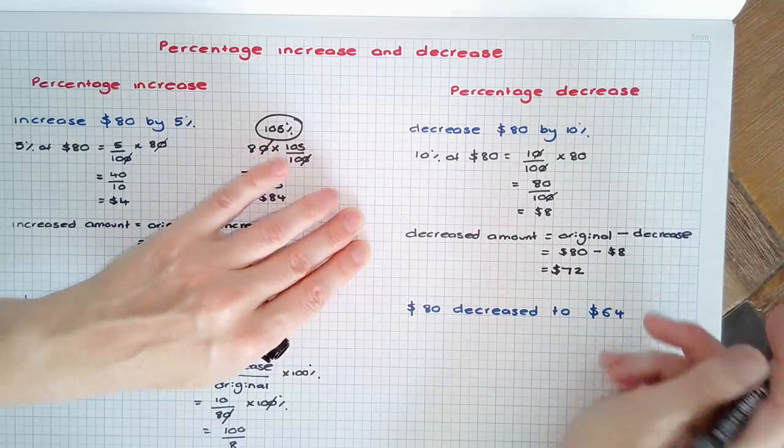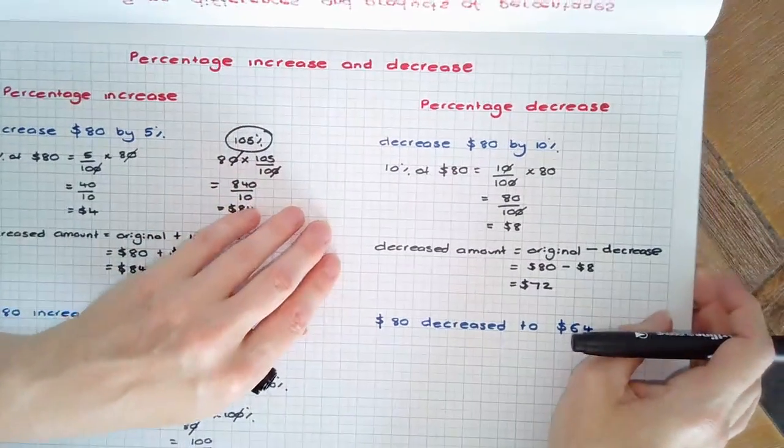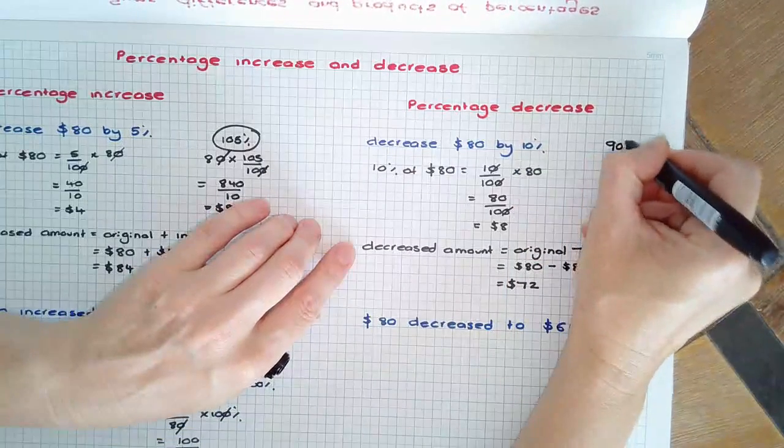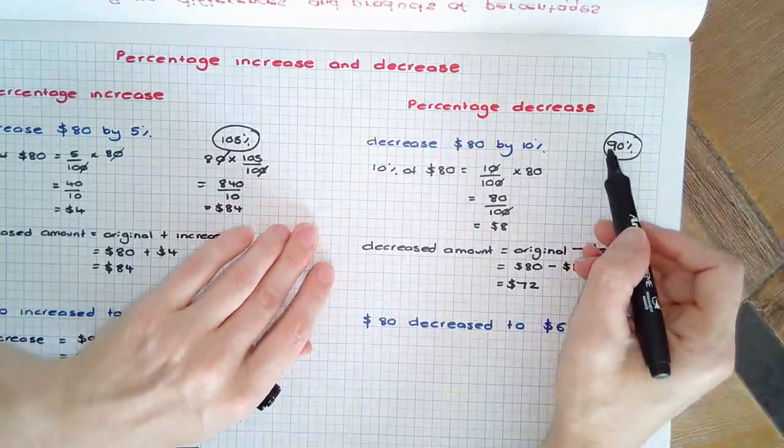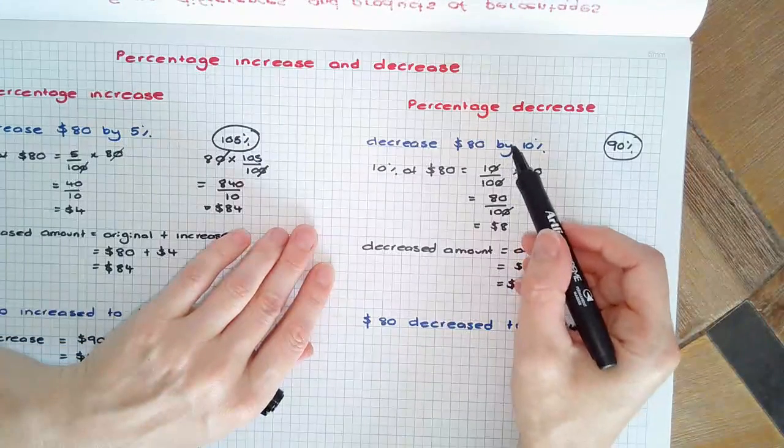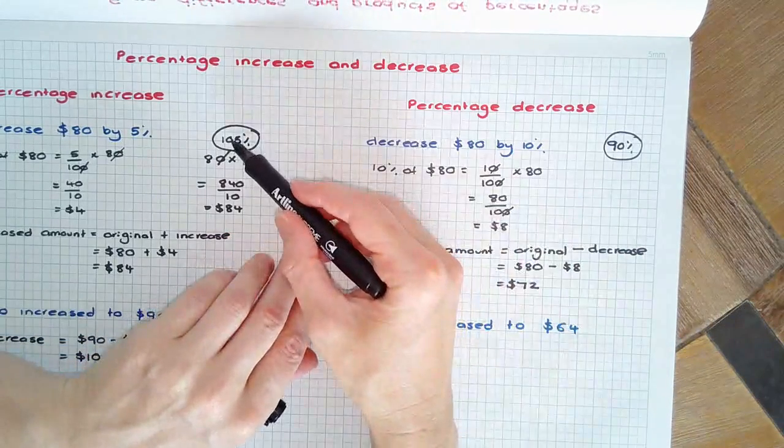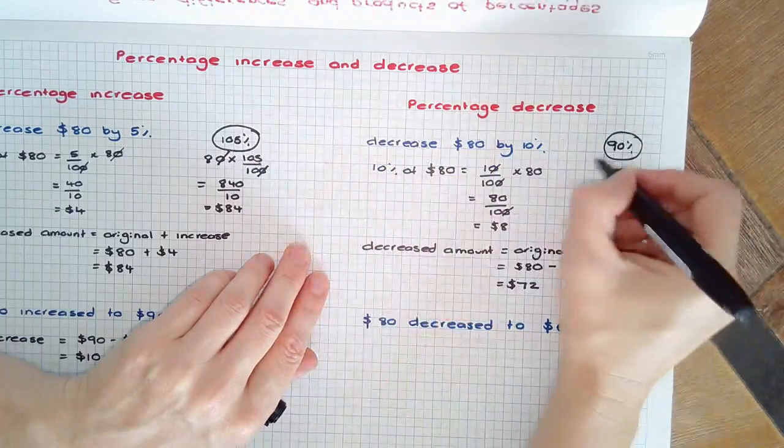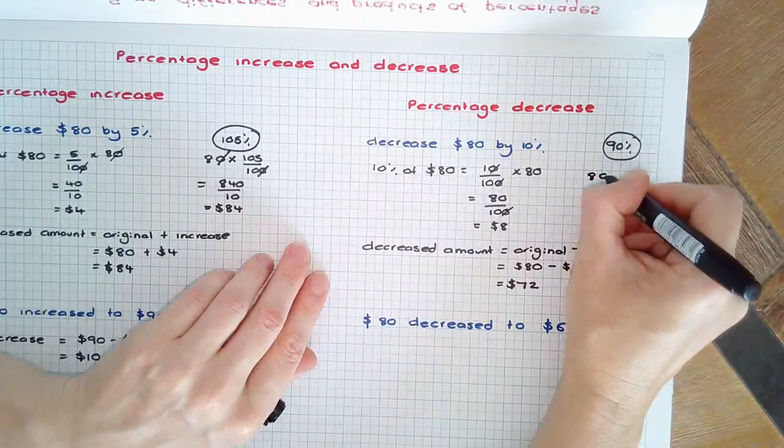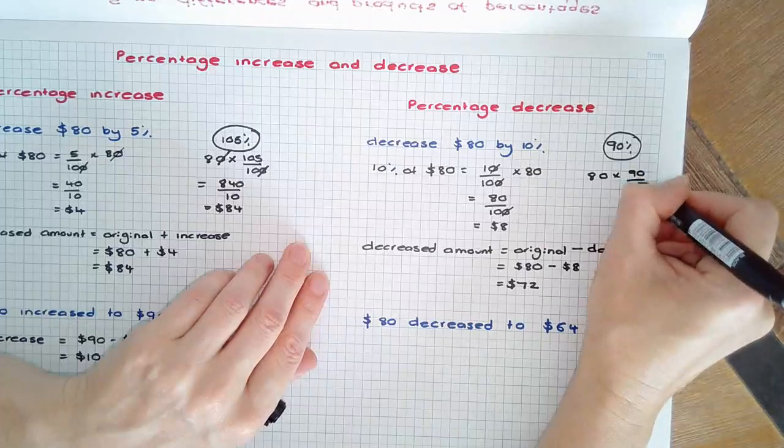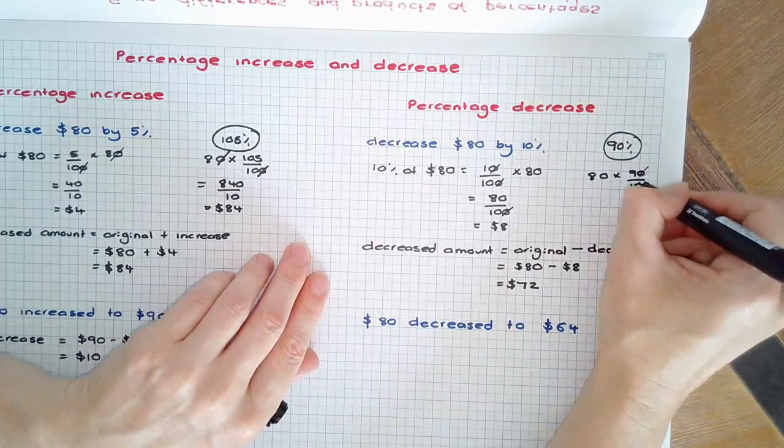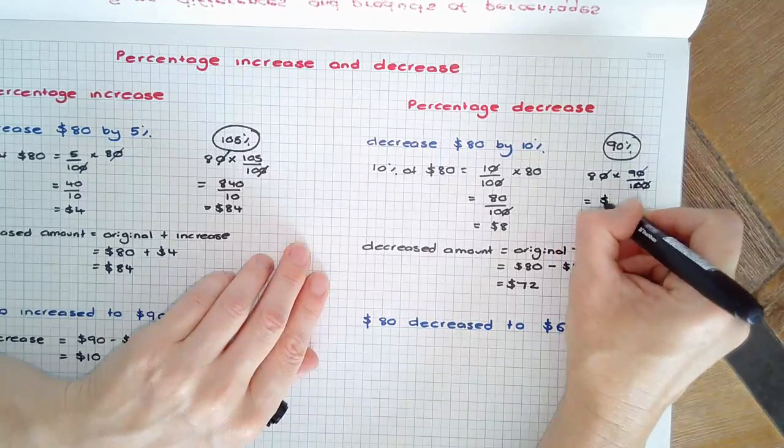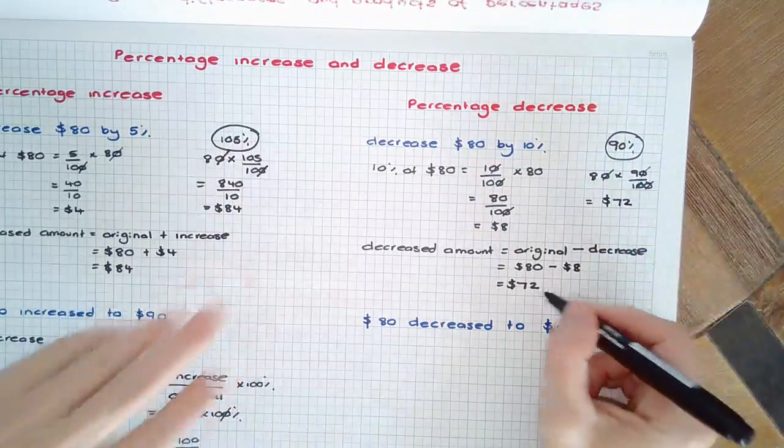Again, another way to consider this problem is to multiply the amount by 90%. That is the 100% minus the discount. Here we did 100% plus the percentage increase. So $80 times 90 over 100 using some simplification, 8 times 9 we would get $72 which is the same answer.